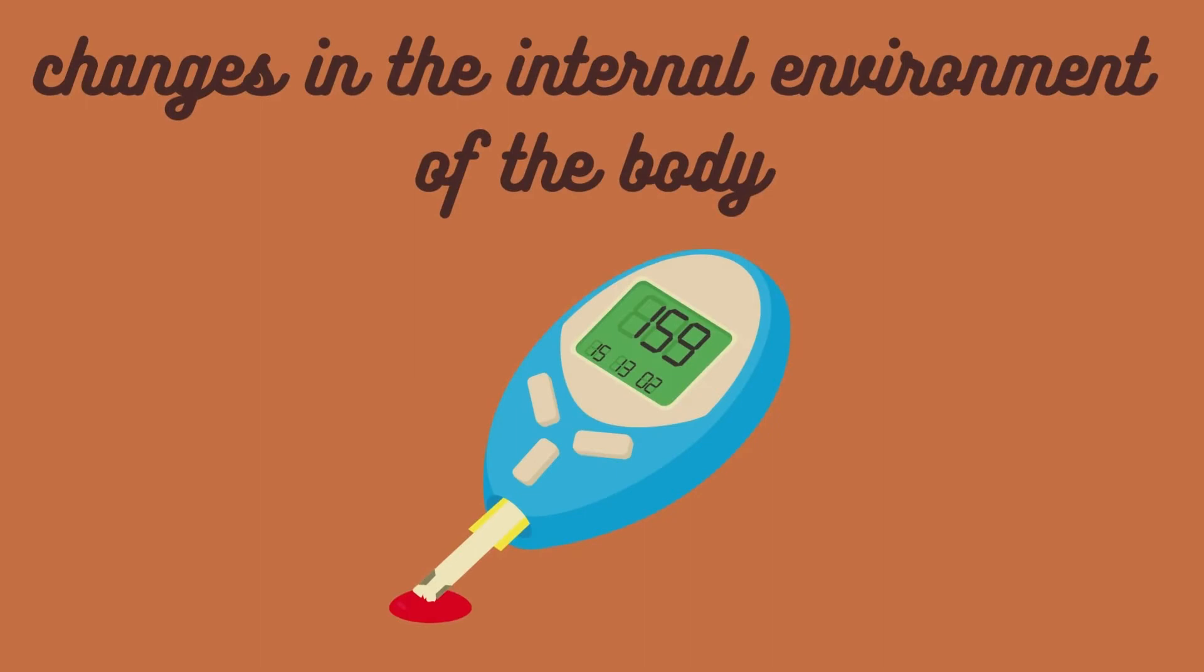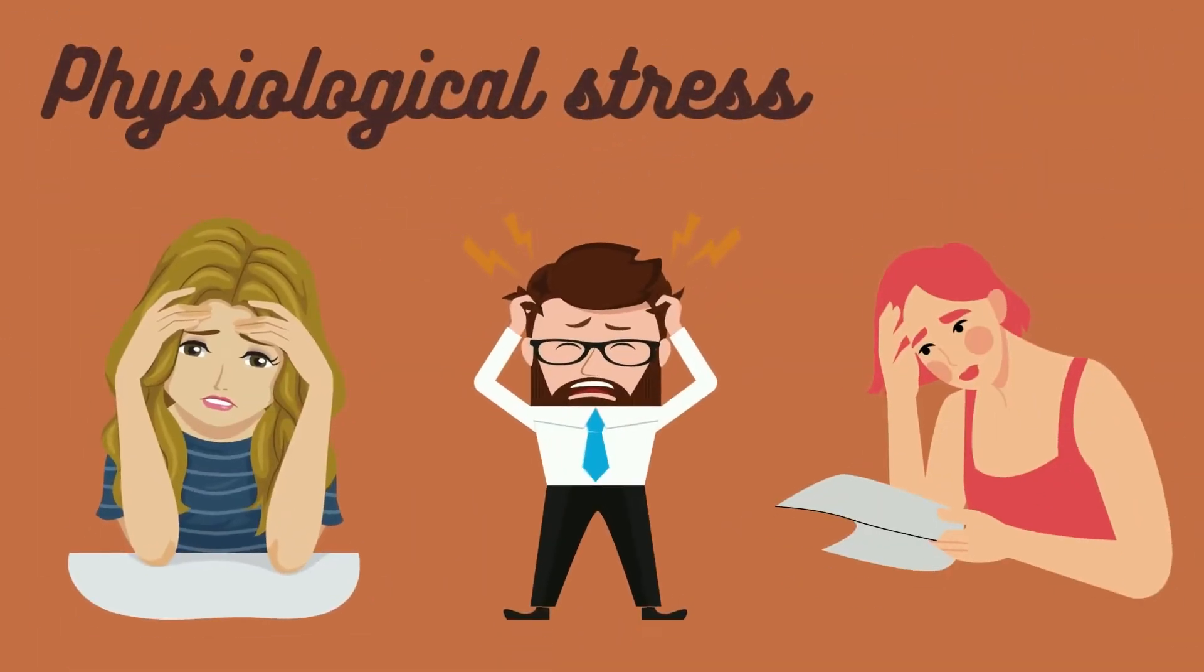And it is not necessary for these disturbances to be external; they can be changes in the internal environment of the body, like for example the drop of blood glucose when we forget to eat for a long period of time. Also, the stress we encounter in our daily life because of work or school disturbs our internal environment and messes with our hormone levels.